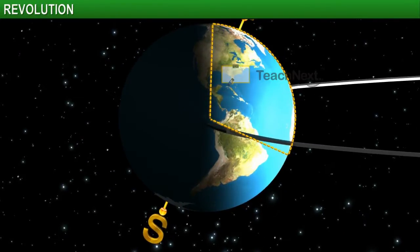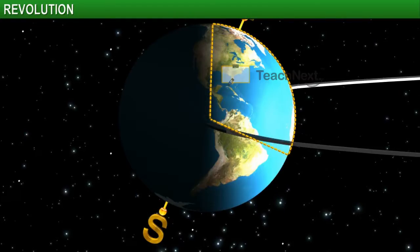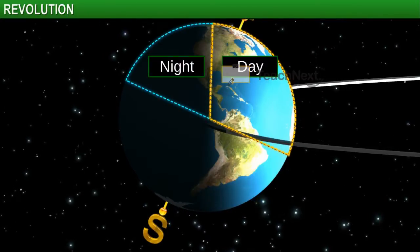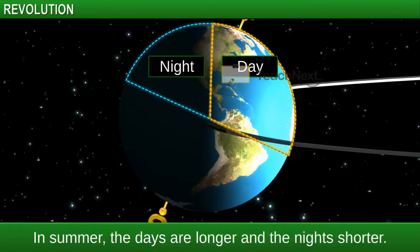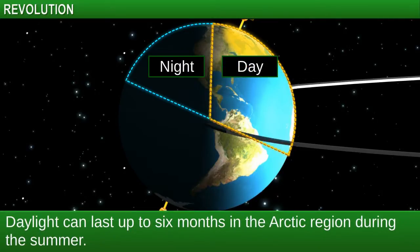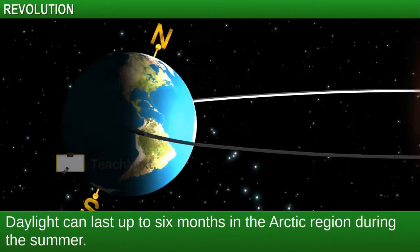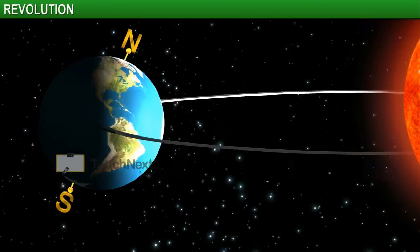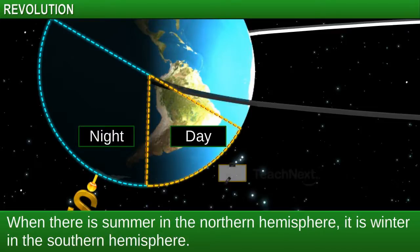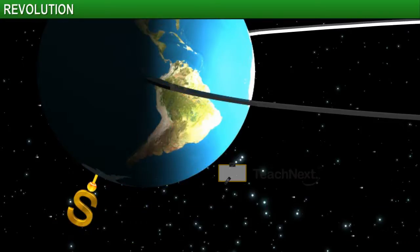Sunlight on these areas is at its maximum during this time of the year, and hence we have longer days and shorter nights. In fact, the areas beyond the Arctic Circle have daylight for six months at a stretch.